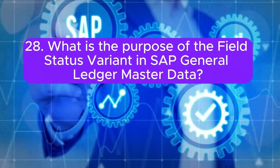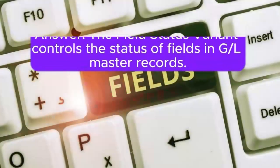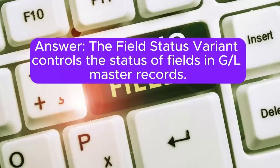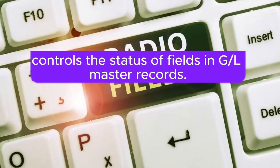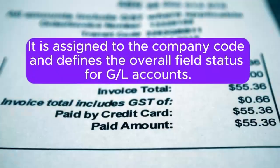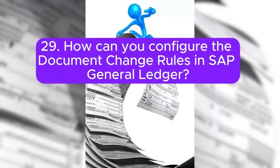Question 28: What is the purpose of the field status variant in SAP General Ledger master data? Answer: The field status variant controls the status of fields in General Ledger master records. It is assigned to the company code and defines the overall field status for General Ledger accounts.